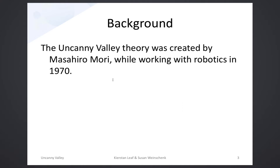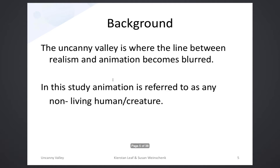The uncanny valley theory was created by Masahiro Mori, a Japanese professor in robotics, in the 1970s. His idea was that as robotics became more human-like — moving from factory arms to robots with faces — people were becoming unnerved or creeped out by the realism of these things. That's where the uncanny valley came from.